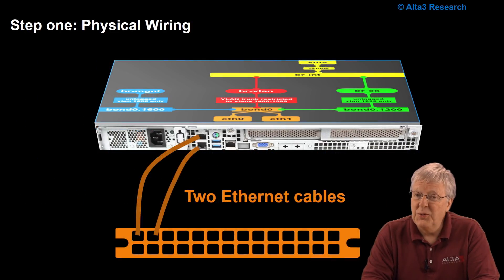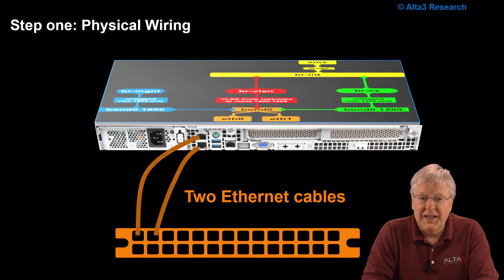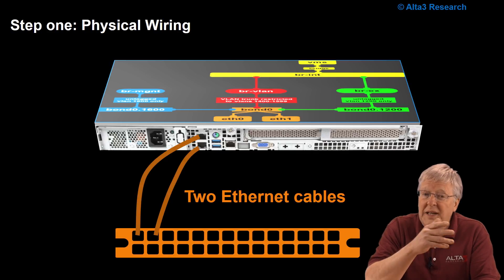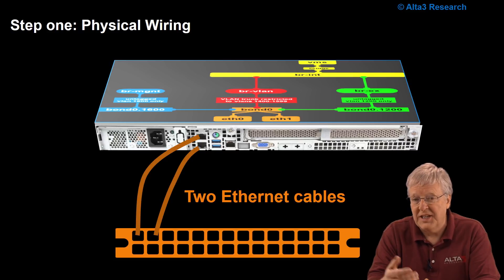Step one is the physical wiring. So you take a compute node or a controller. We're only going to need two Ethernet cables. It couldn't be simpler. Run the two Ethernet cables from the Ethernet switch up to the node or the host itself, just like you see here.